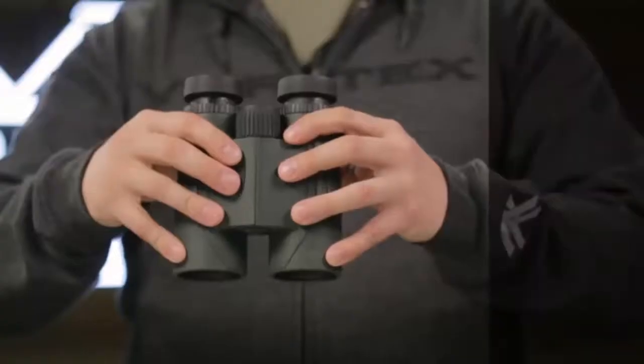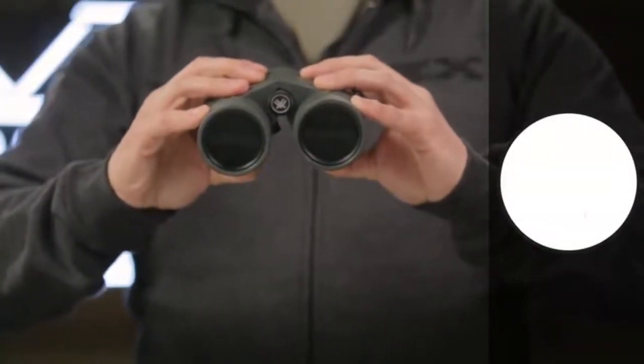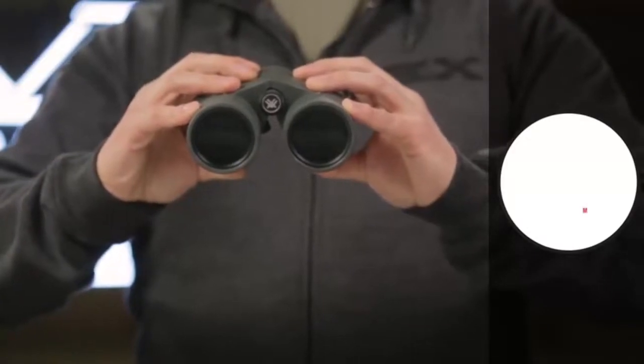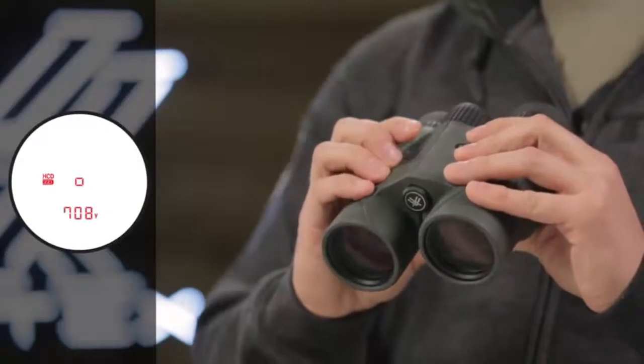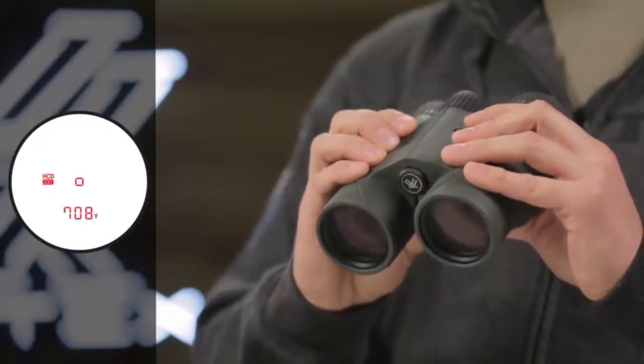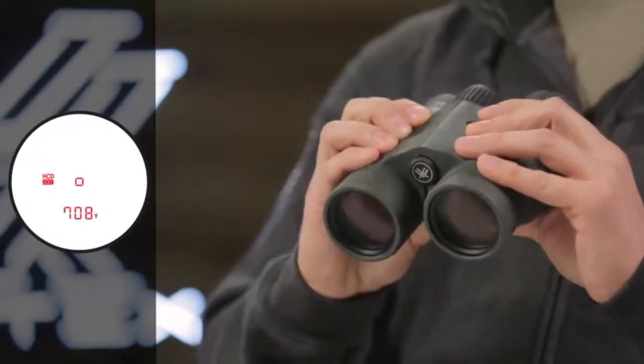The primary HCD mode displays an angle-compensated distance that is ideal for the majority of hunters and shooters with either rifle or bow. An advanced loss mode provides the option to calculate long-distance, high-angle shots with increased precision.